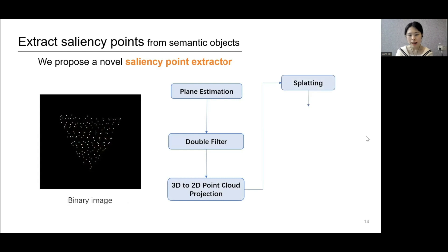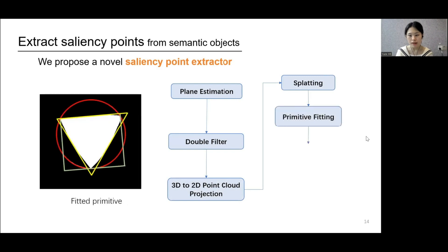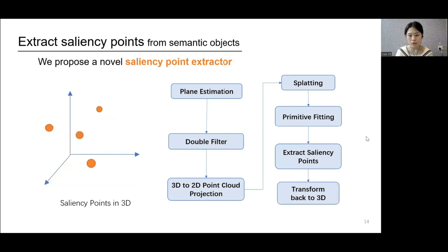Finally, we leverage the prior that the selected semantic objects usually have regular geometries to fit the binary image into a regular primitive. Then we extract the vertices and center of the fitted primitive as saliency points and project them back to 3D.